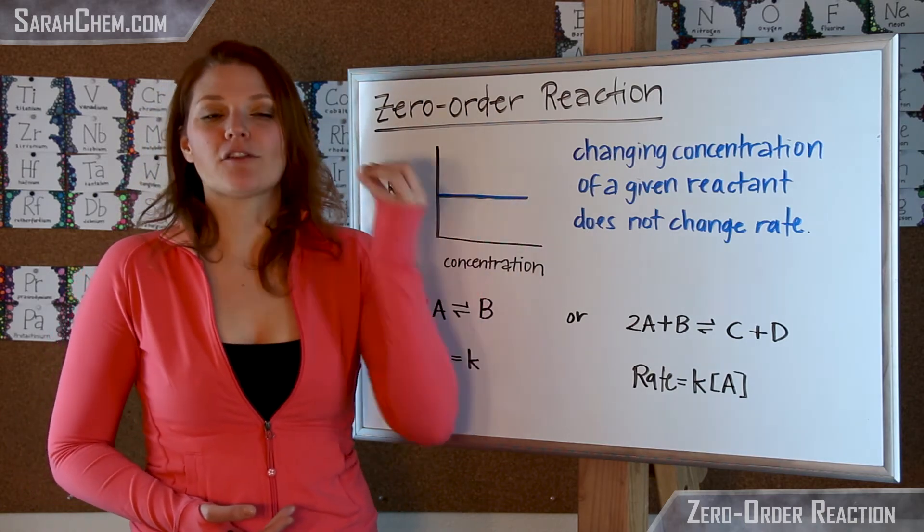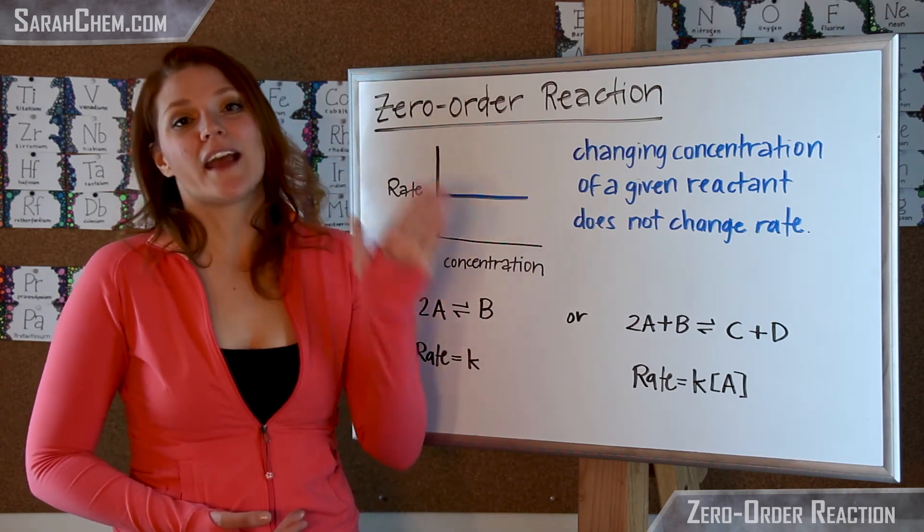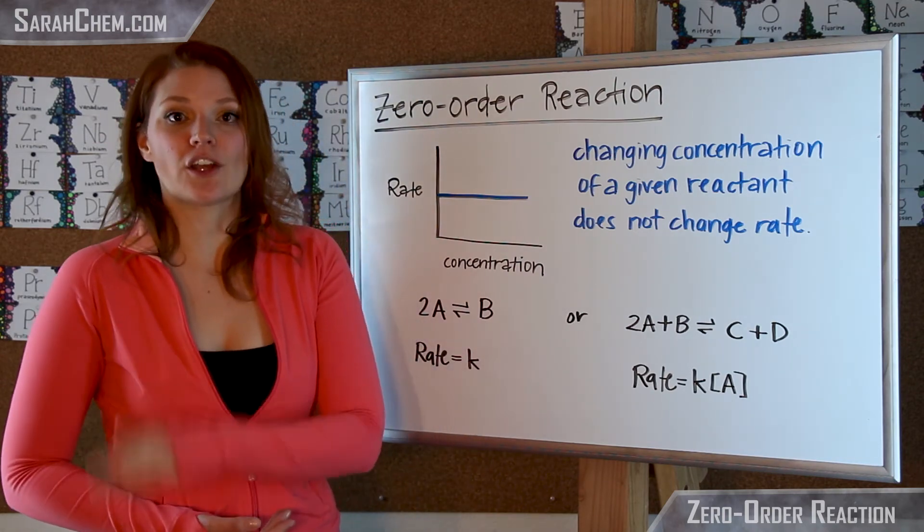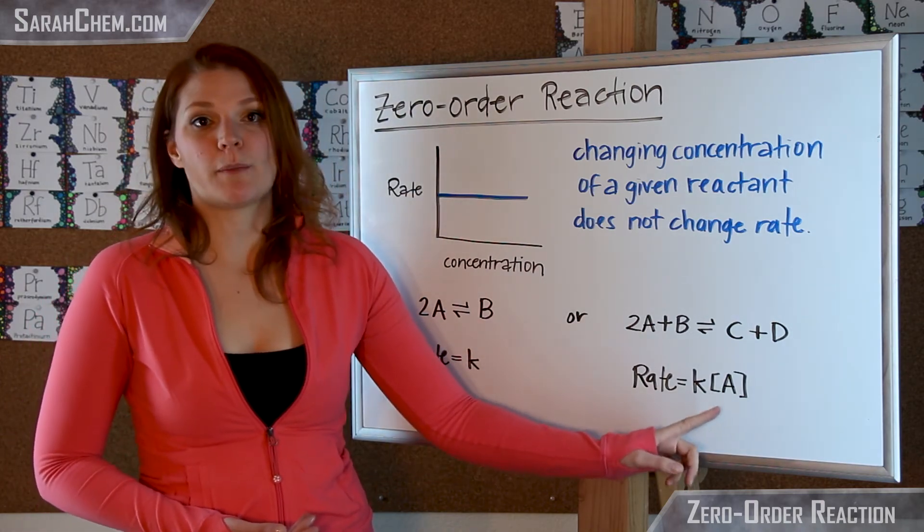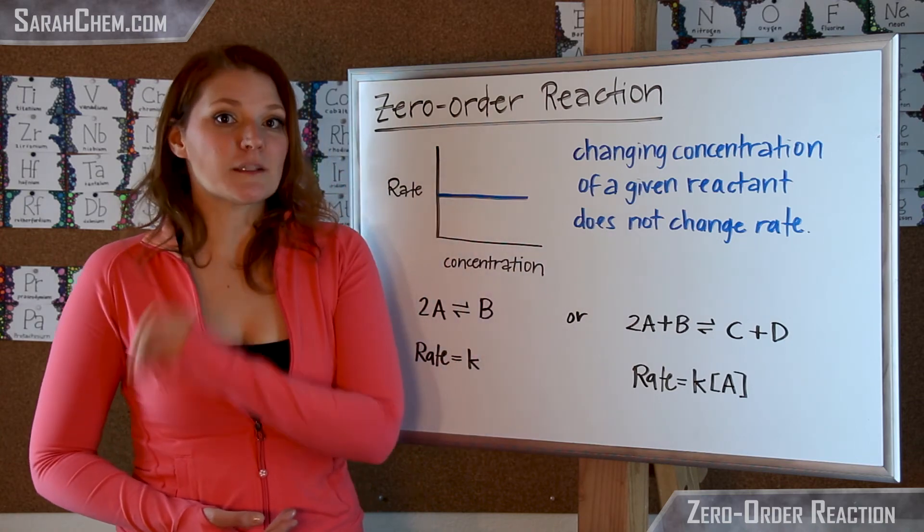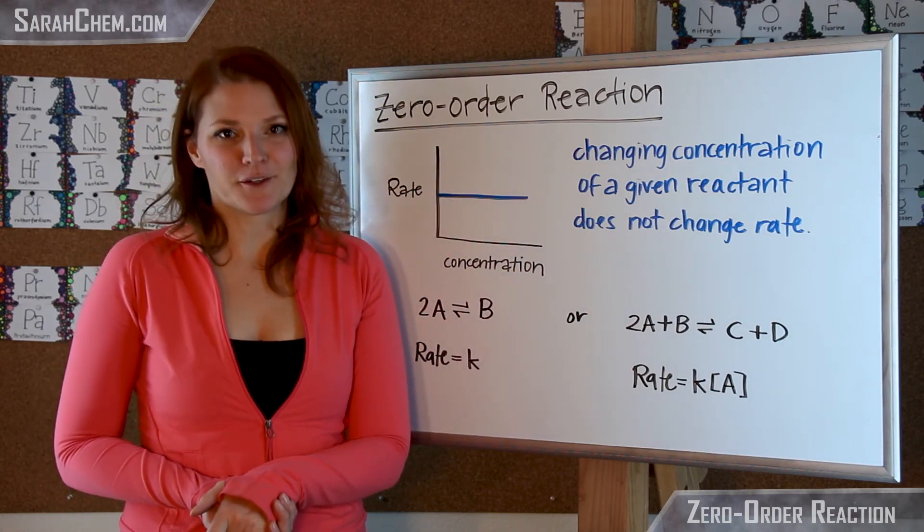That means B would not be part of the rate determining step, and B therefore has no effect on how fast or slow the reaction can go. Overall, this reaction is first order because it is first order with respect to A, but with respect to B, it would be zero order. So that is one way to understand what it means to be a zero order reaction.